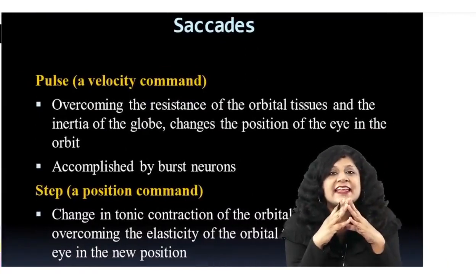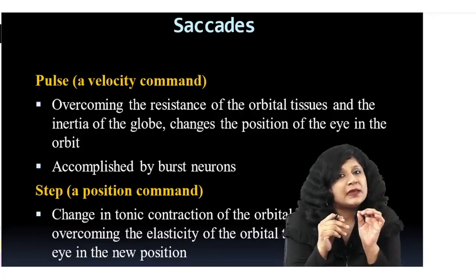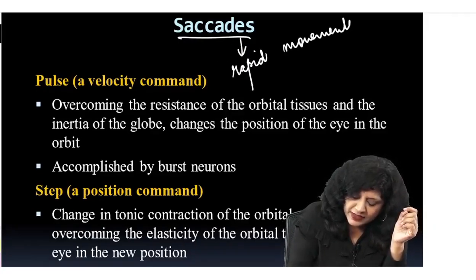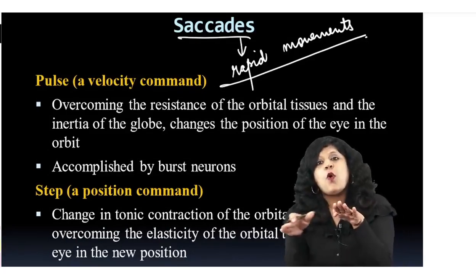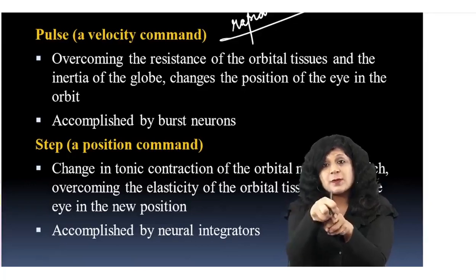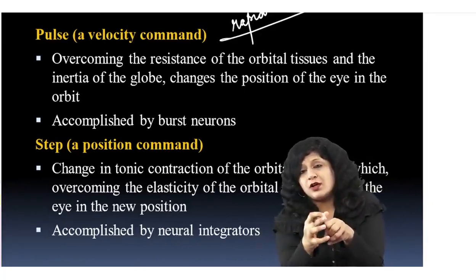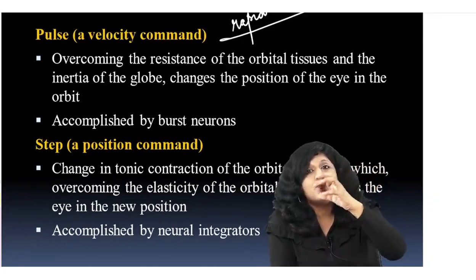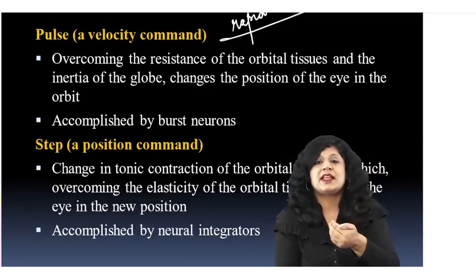A common query is: what is a saccade? Saccade means rapid movements — whenever we have rapid eye movements, that is called a saccade. This occurs in order to overcome the resistance of the orbital tissues. When the eye position needs to change, it moves against the resistance of the orbital tissues, and if that movement is fast, it is called a saccade.